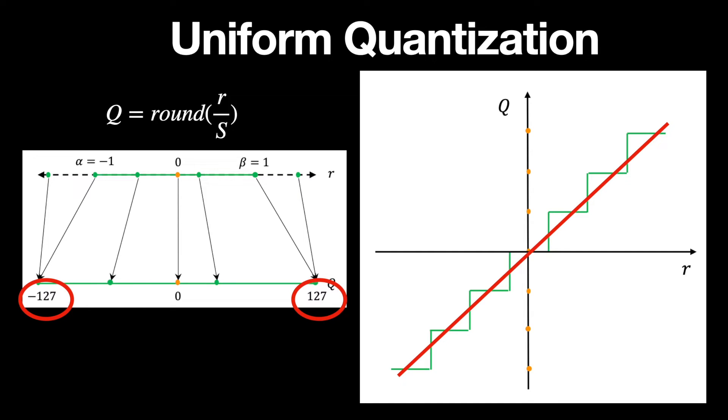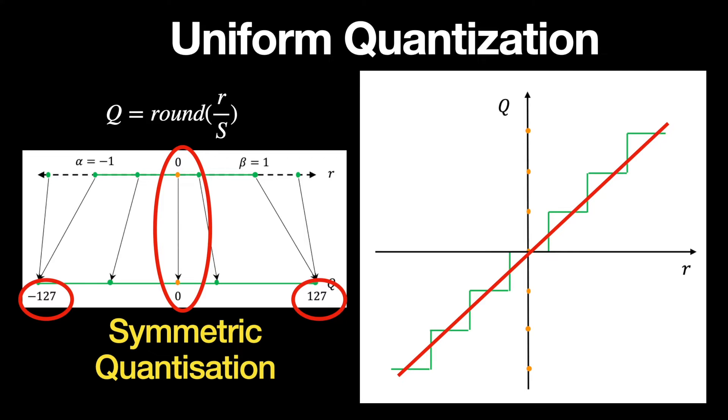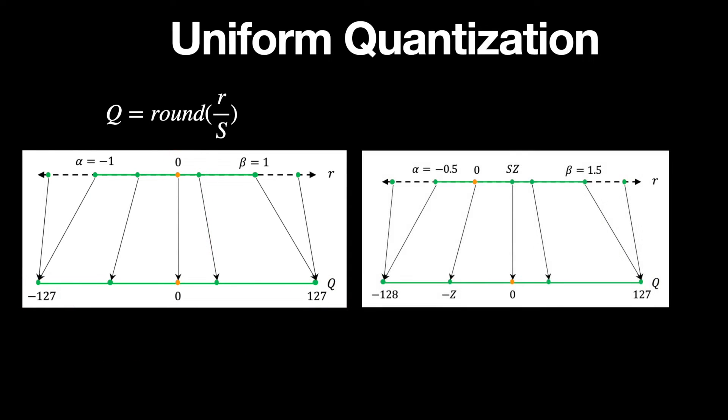And ensure that the zero of the input perfectly maps to the zero of the output, leading to a symmetric mapping, and this quantization is therefore called symmetric quantization. On the other hand, if the values on either side of zero are not the same, for example, minus 128 to plus 127, and additionally, if you are mapping the zero of the input to some other value other than zero at the output, then it's called asymmetric quantization.